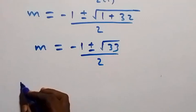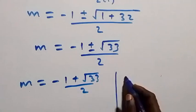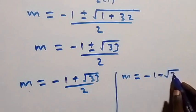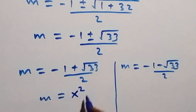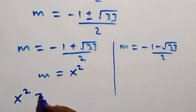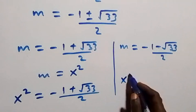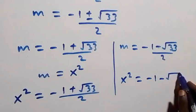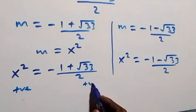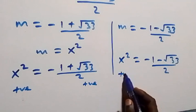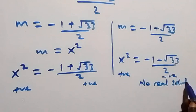We have two values of m. The first is m₁ equals (minus 1 plus √33) over 2, and the second is m₂ equals (minus 1 minus √33) over 2. Recalling that m equals x², and since x² must be a positive number, the first value is positive so it gives a real solution. The second value is negative, so there is no real solution on that side — we reject it.